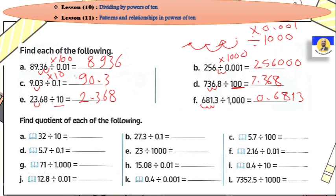If we have 32 divided by 10, so 32 divided by 10 equals what? Move one decimal back. So it will be 3.2.